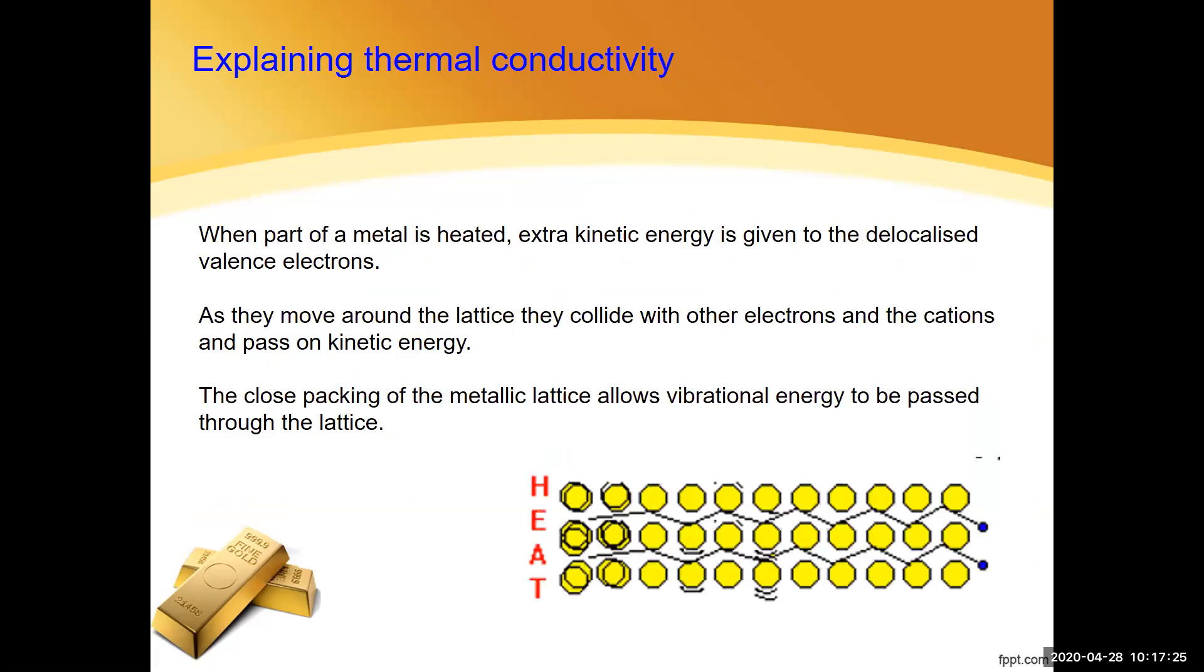Thermal conductivity, they conduct heat. Metals are really, really good at conducting heat. And the reason is twofold. One of them is that close packing of the lattice means that vibrations can be passed on quite easily through the lattice. But mostly it's the fact that the electrons are delocalized and constantly moving around the lattice. So if you heat one end of a metal, you're going to give extra kinetic energy to those delocalized electrons and they're going to be zipping around the lattice. They're going to collide with other electrons and they're going to collide with cations in the lattice. And that's all going to pass on kinetic energy. So this happens really quite quickly in a metal because those electrons are zipping around the lattice so fast and they can carry that extra kinetic energy with them and pass it on to other parts of the lattice.